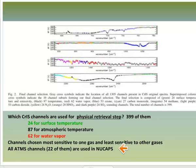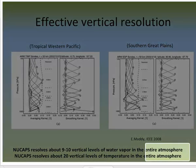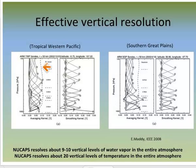All 22 ATMS channels are used in NuCAPS. The ATMS retrieval is the solution if either the cloud clearing fails or if the CrIS physical retrieval fails. NuCAPS resolves about 9 to 10 vertical layers of water vapor and about 20 layers of temperature in the atmosphere. The averaging kernel functions for temperature show how the effect of one CrIS spectrum might be spread out in the vertical, with some geographic variability to the kernels.